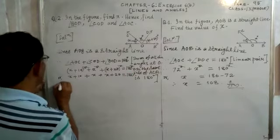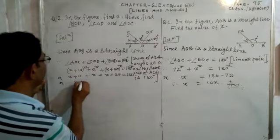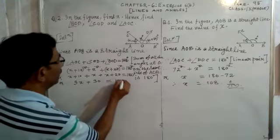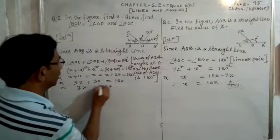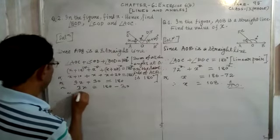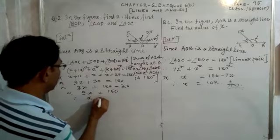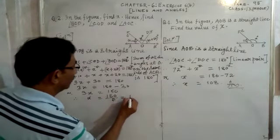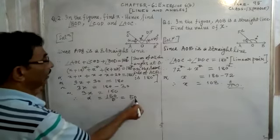Adding all the x terms: x + x + x = 3x. And 10 + 20 = 30. So 3x + 30 = 180. Taking 30 to the right-hand side: 3x = 180 minus 30 = 150. Therefore x = 150 divided by 3, which equals 50. So the value of x is equal to 50.